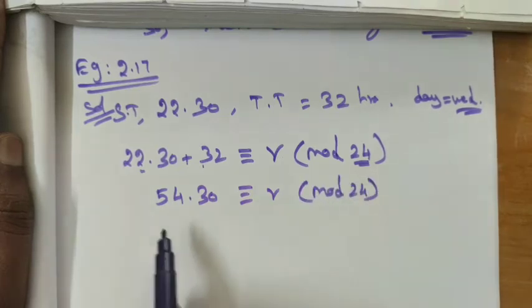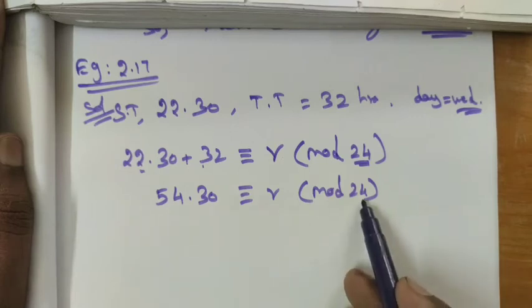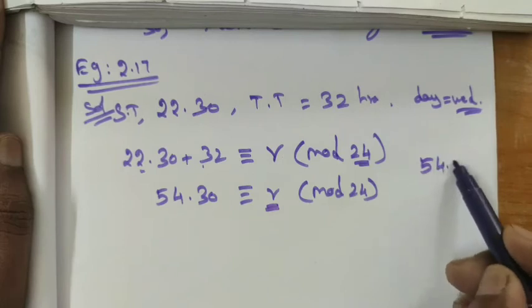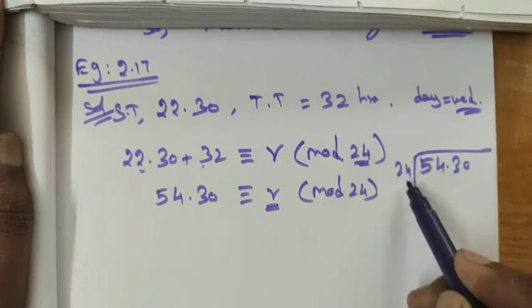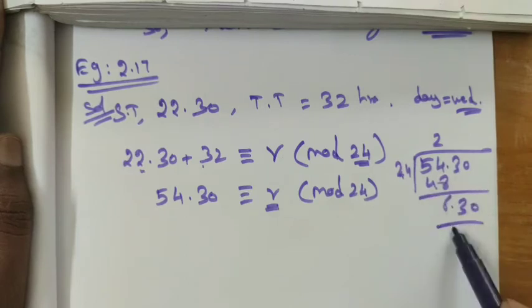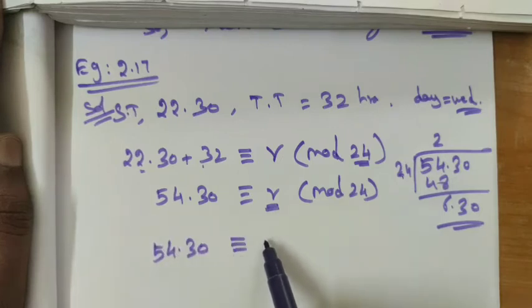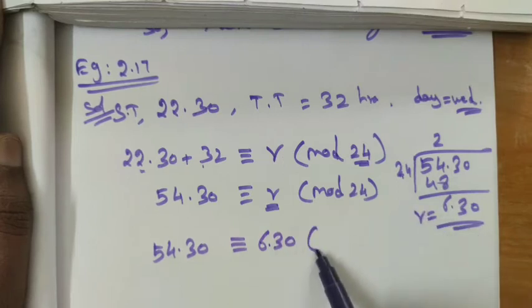So 54:30 divided by 24 — 24 times 2 is 48 — and the remainder is 6:30 hours. So 54:30 is congruent to 6:30, meaning the remainder R is equal to 6:30 mod 24.